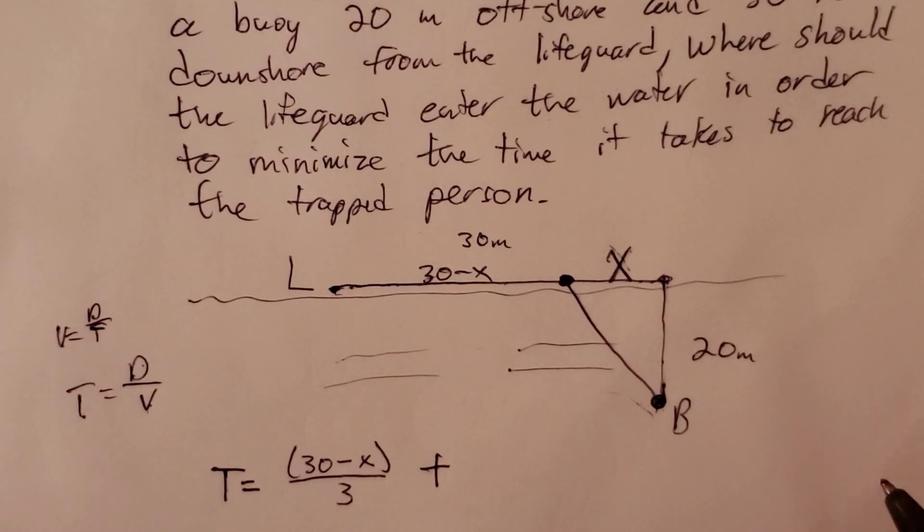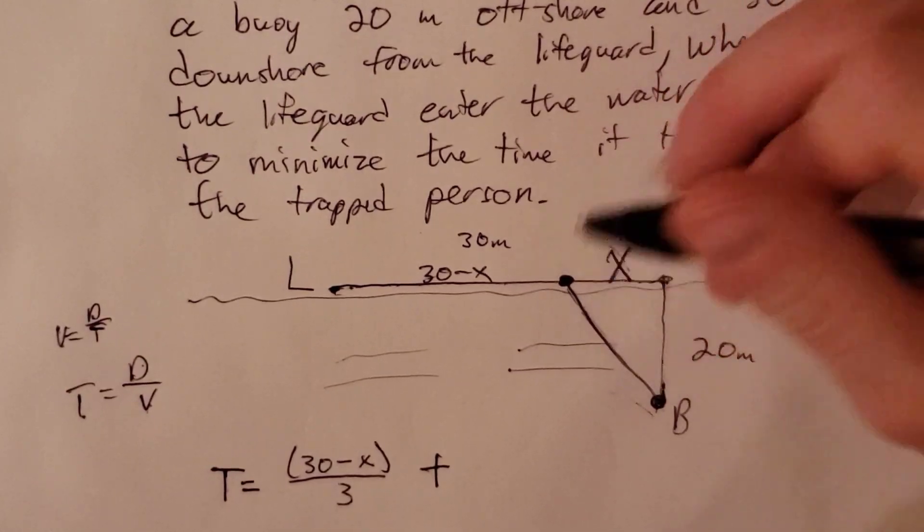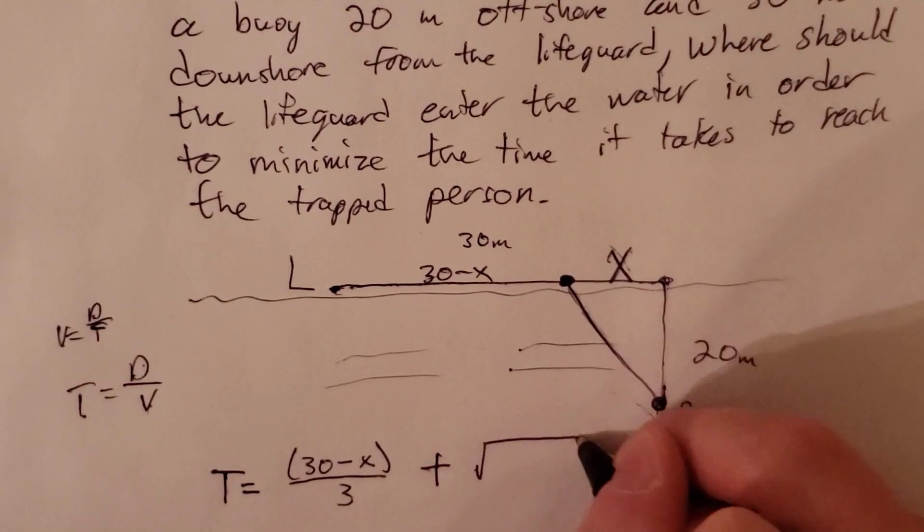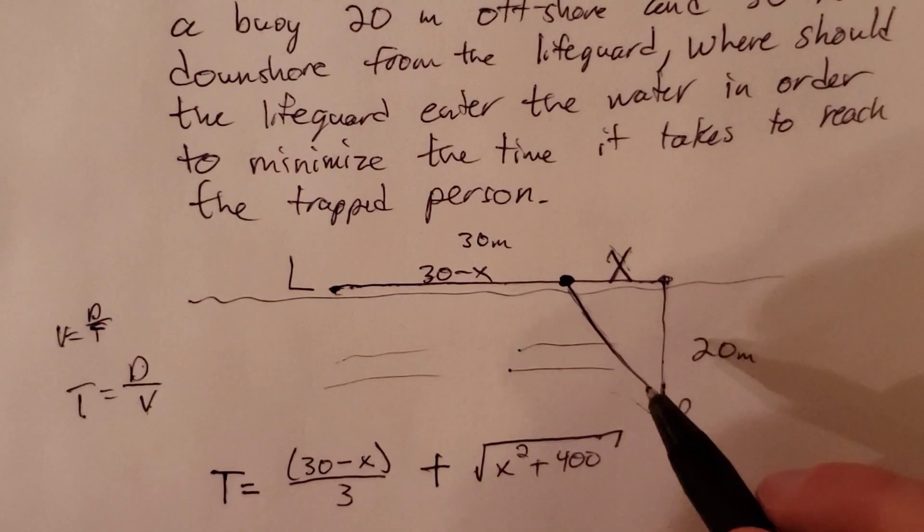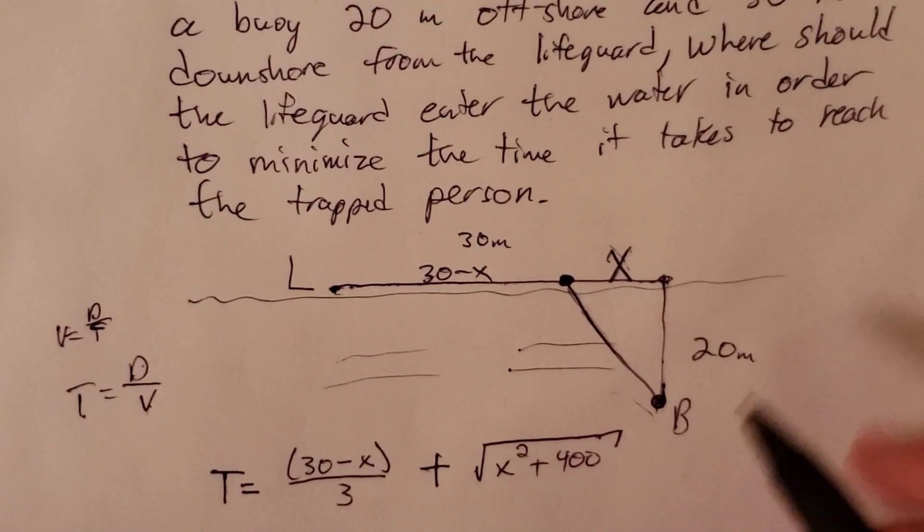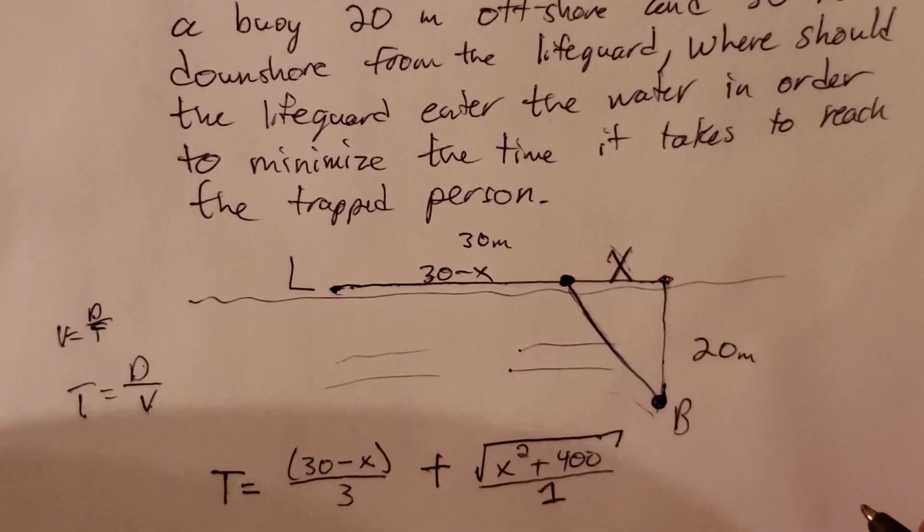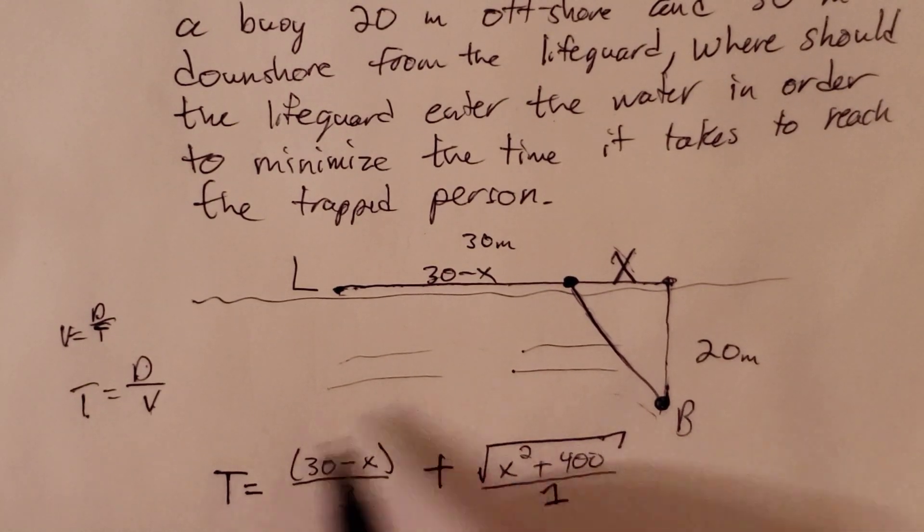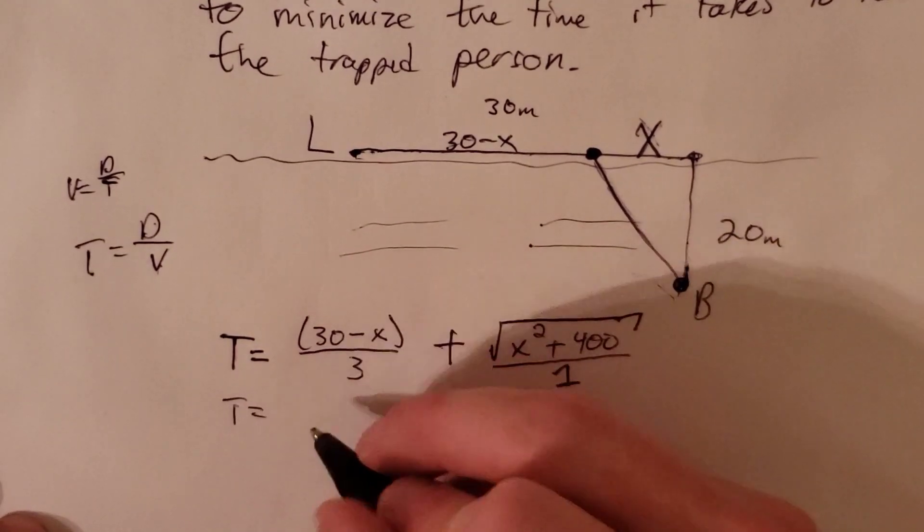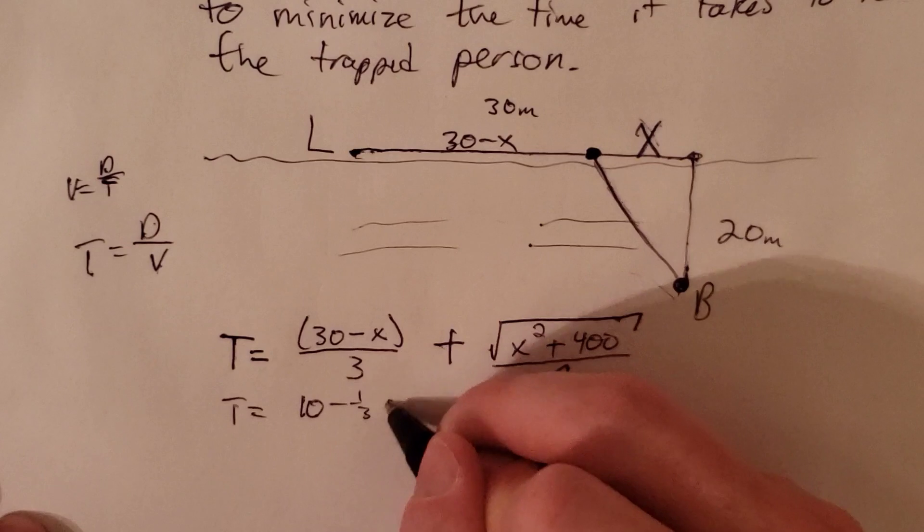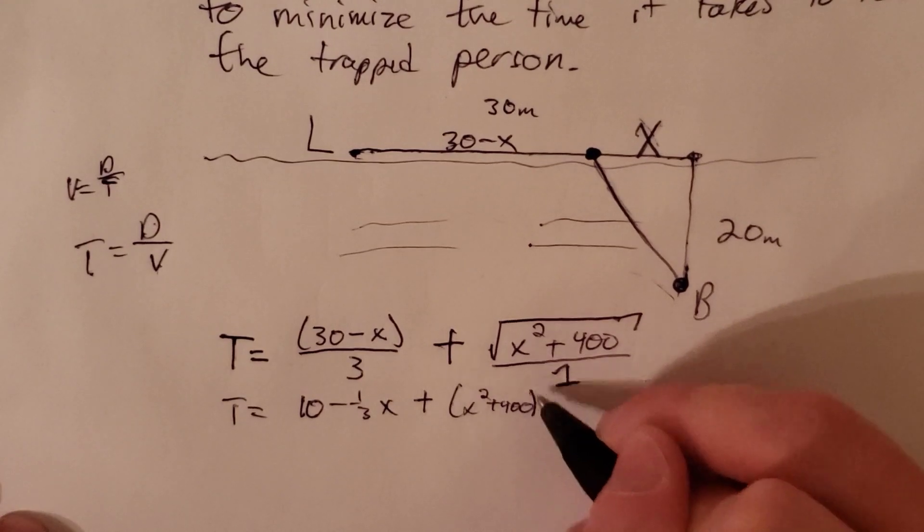Now what is the time it would take for the lifeguard to swim to the buoy? That part of the problem here. Well that is the distance which is square root of x squared plus 20 squared which is 400, divided by the velocity, but the velocity is one meter per second. So we get this expression right here which we can rewrite as T is equal to 10 minus one-third x plus x squared plus 400 to the one-half power.